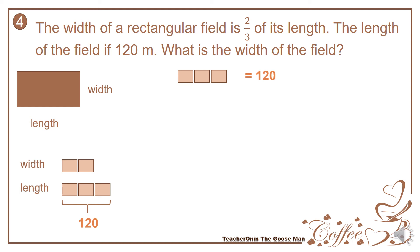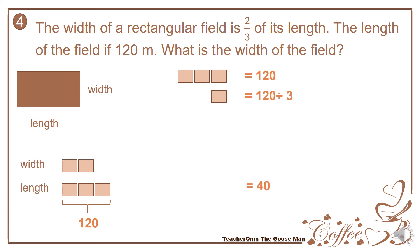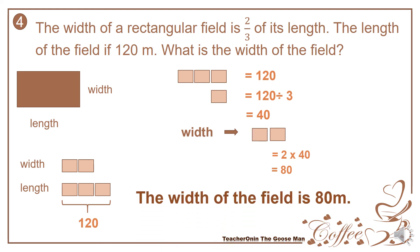I want to find out the value of each part, so I'll divide 120 by 3 to determine the value of each part. The value of each part is equal to 40. But I want to find out the width, and take note that the width has two parts. So 2 times 40 is equal to 80. Therefore, the width of the field is 80 meters.